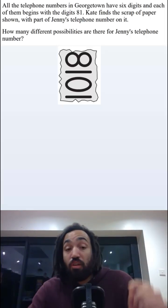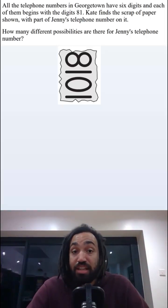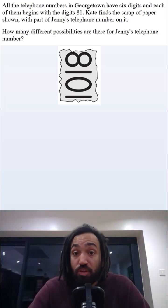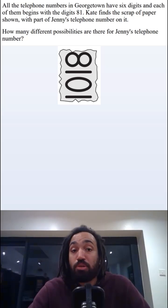Can you solve this fun question from the 2016 UKMT Intermediate Olympiad? All telephone numbers in Georgetown have six digits which begin 81. A scrap of paper is found with part of a number on it. How many possibilities are there?